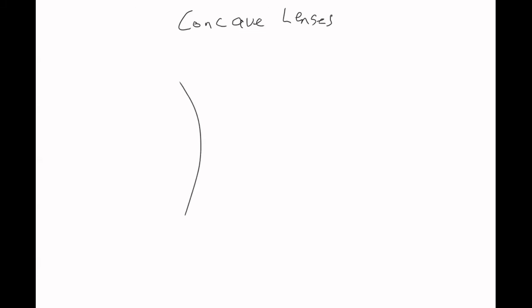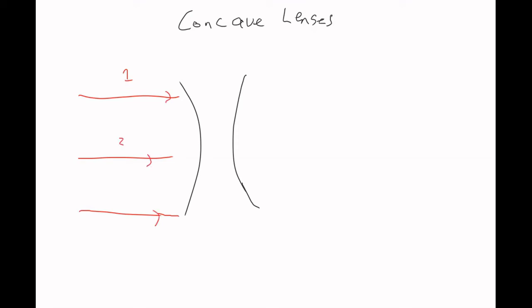The concave lens looks like this. Again, if we do three parallel rays of light entering the lens — one, two, three — ray two just goes straight through the center again, and then rays one and three go outward. Concave lenses take parallel light and spread it out on the right-hand side, and so these are called diverging.